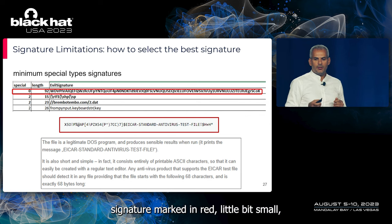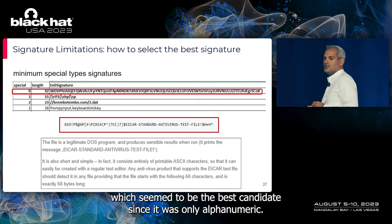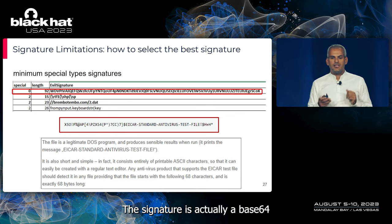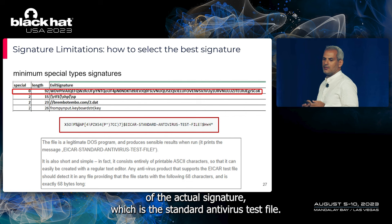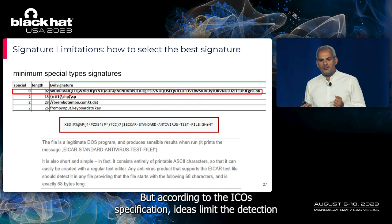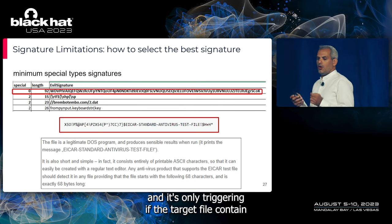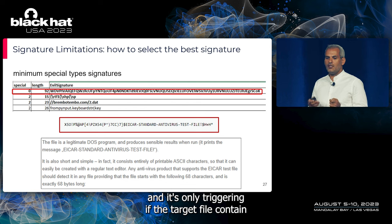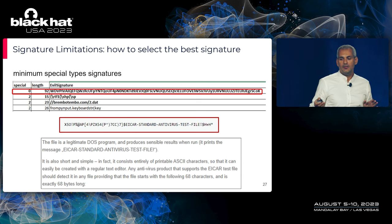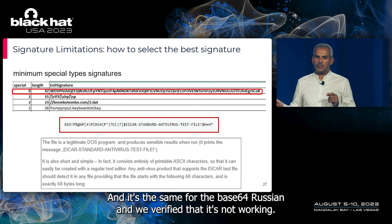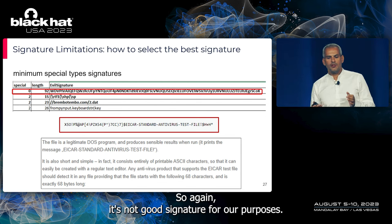We found a signature that seemed to be the best candidate — it was alphanumeric and was actually a base64 encoding of the EICAR signature, the standard antivirus test file. However, according to the EICAR specification, EDRs limit detection so it only triggers if the target file contains the exact signature without any extra characters. The base64 version behaved the same way and did not work, so it was not a good signature for our purposes.